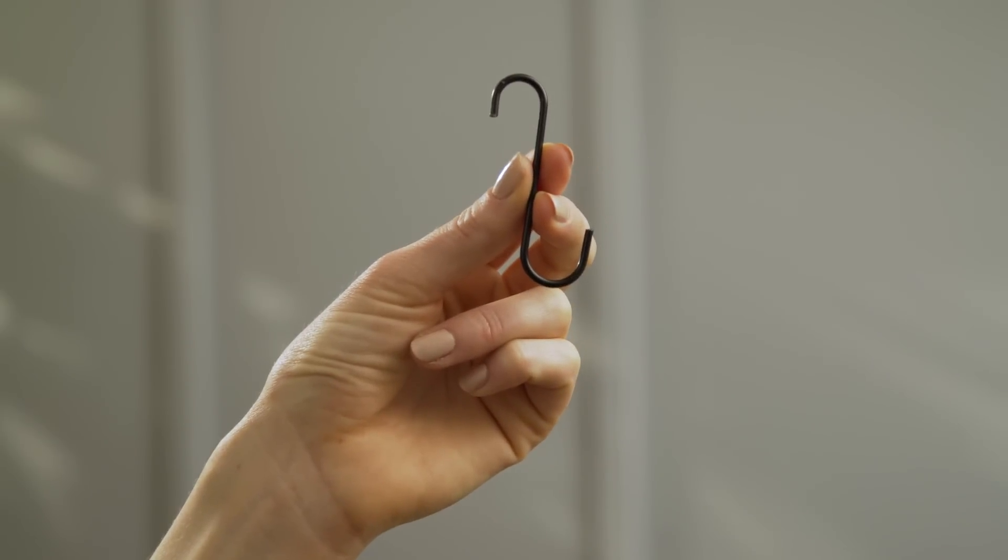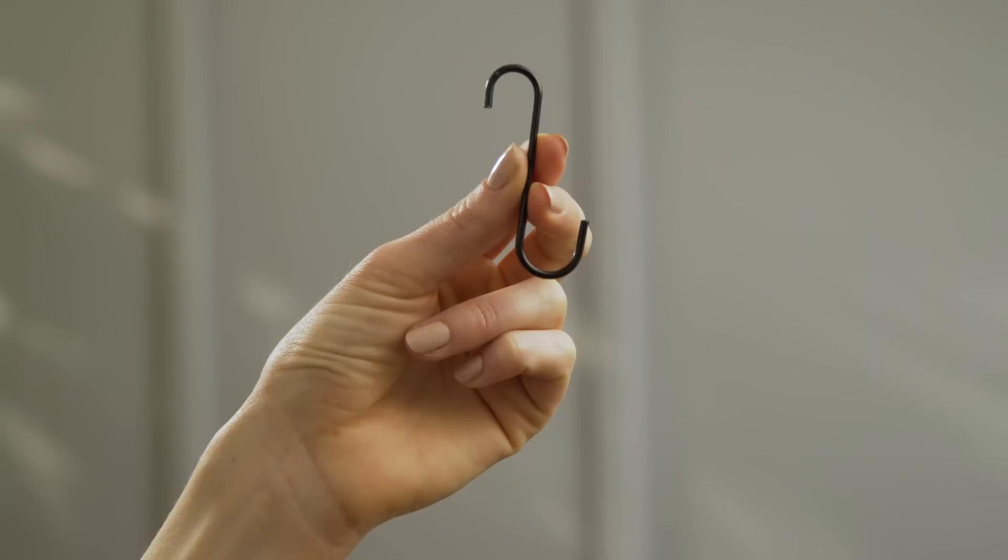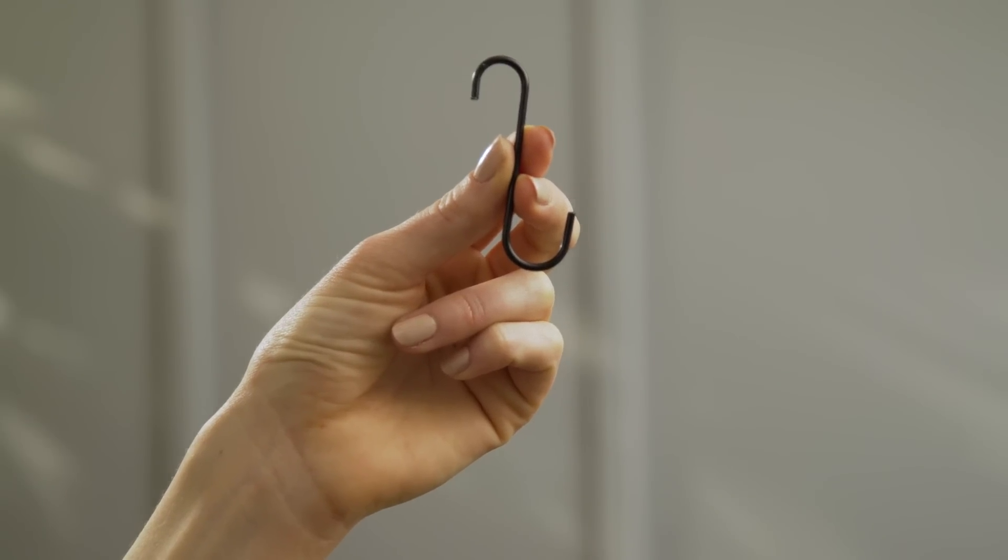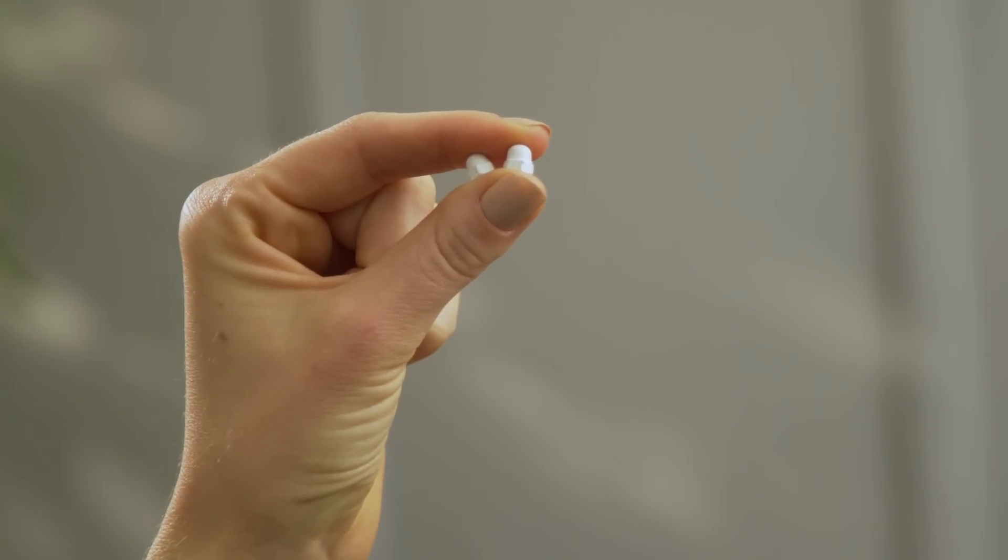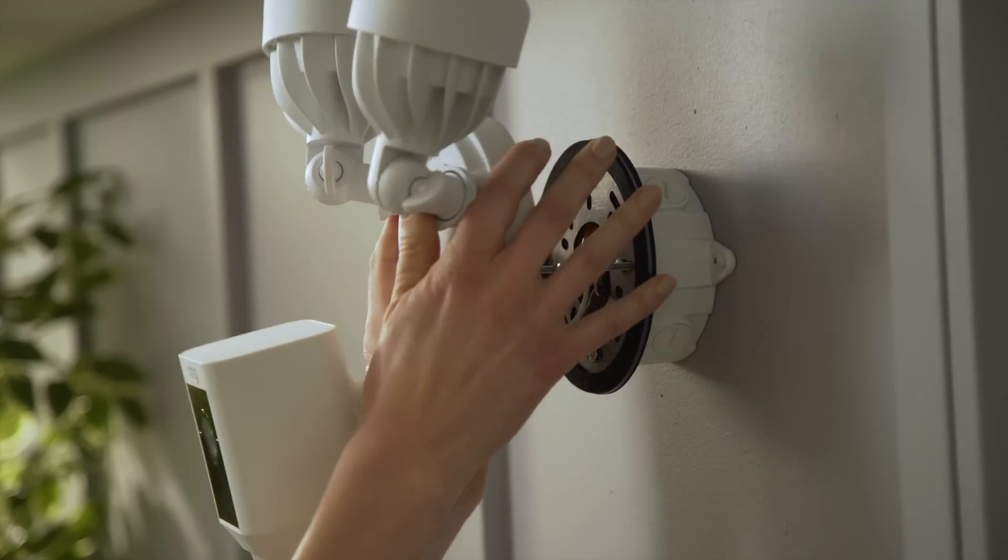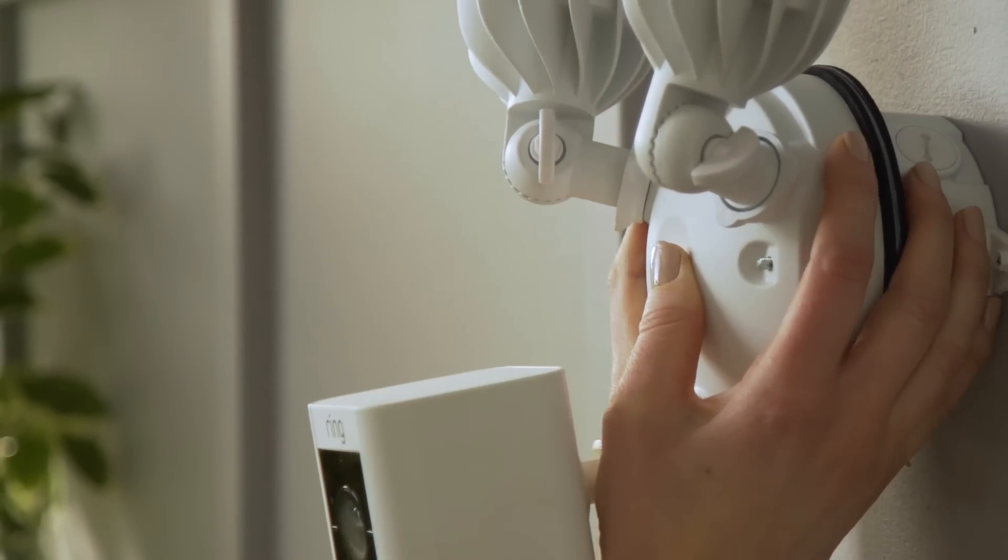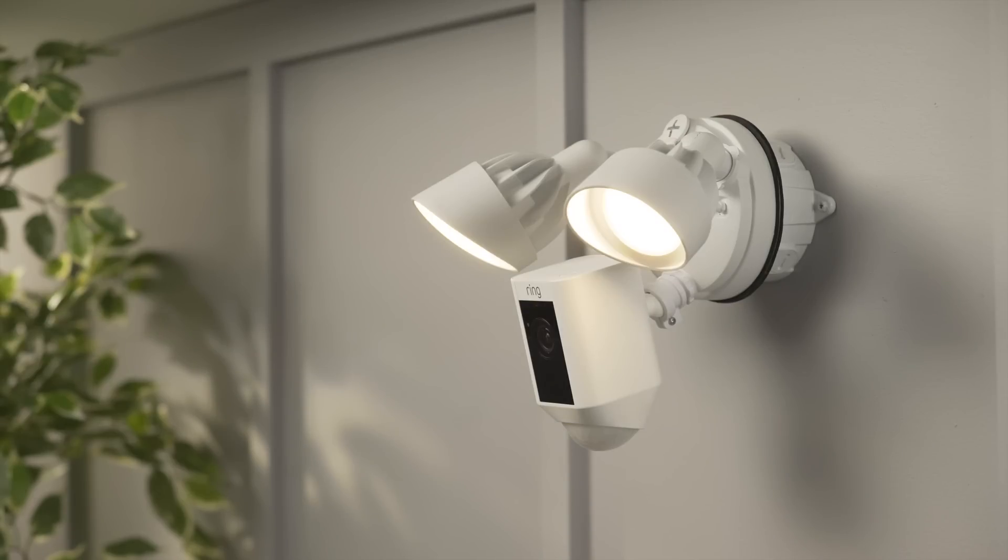This hook is for hanging your floodlight cam from the mounting bracket while you're connecting the wires. These small cap nuts will secure your floodlight cam to the bracket. You'll need to install your floodlight cam and wire it to power before you can complete the in-app setup.